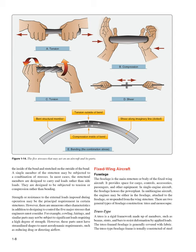Strength or resistance to external loads imposed during operation may be the principal requirement in certain structures. However, there are numerous other characteristics in addition to designing to control the five major stresses that engineers must consider. For example, cowling, fairings, and similar parts may not be subject to significant loads requiring a high degree of strength, but these parts must have streamlined shapes to meet aerodynamic requirements, such as reducing drag or directing airflow.